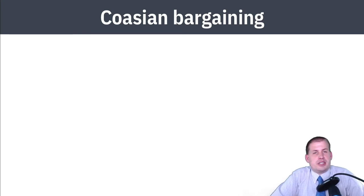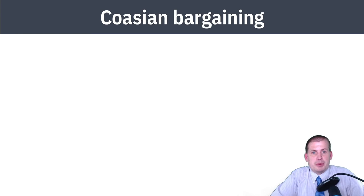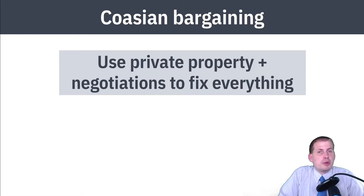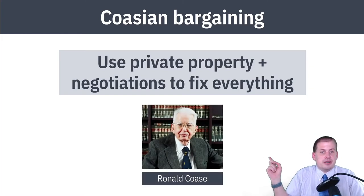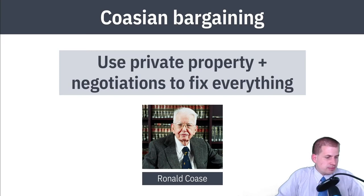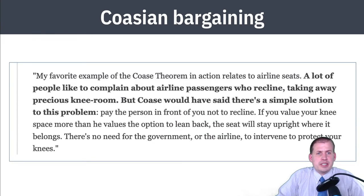The third private sector approach is Coasian bargaining, named after economist Ronald Coase, whom you heard interviewed in the Planet Money episodes. In this situation, you use the notion of private property and negotiations to fix the externality. You can use the Coase theorem to negotiate your way out of externality issues.